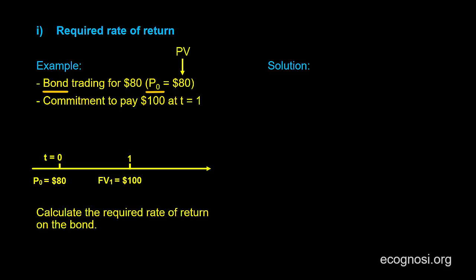This bond promises to pay $100 at t equals 1, that is, in a year's time. This $100 payment is called the face value, or par value, or the principal amount of the bond in bond terminology.